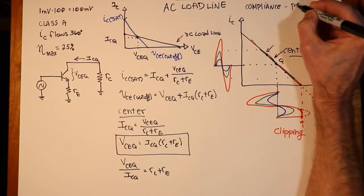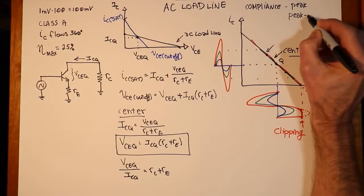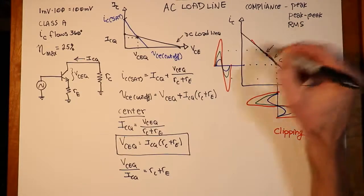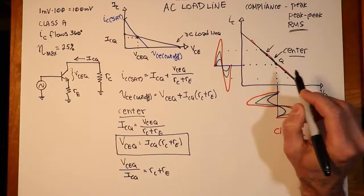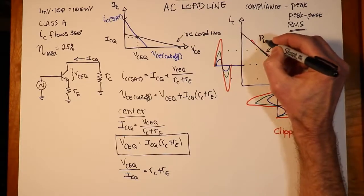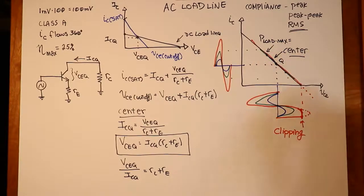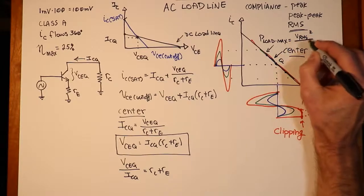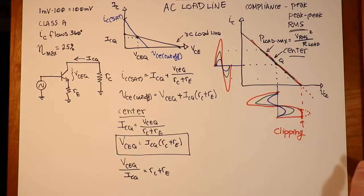The compliance of the amplifier. Now, that could be a peak value. It could be a peak-to-peak value. Very often, we compute this as an RMS value because we want to do a power calculation. I would like to figure out what the power in the load is. So, RMS is a very good one. We can basically say that the maximum load power that we can deliver in the amplifier will equal the RMS compliance squared divided by whatever our load resistor is. Or load value, as it were. So, that's what we're focusing on.